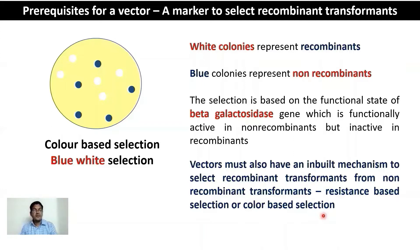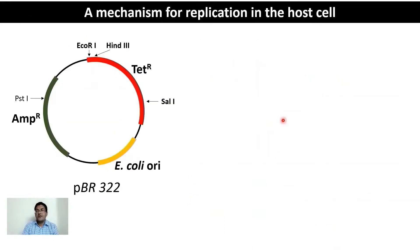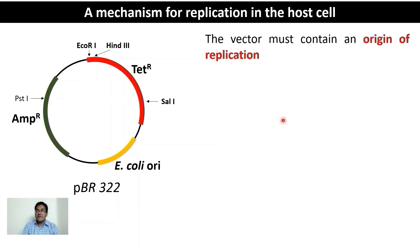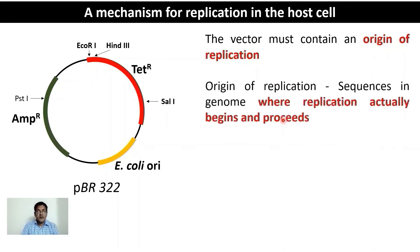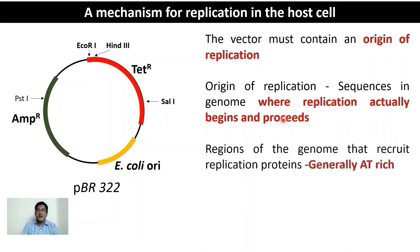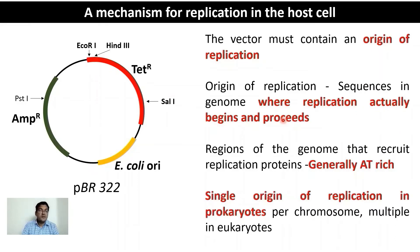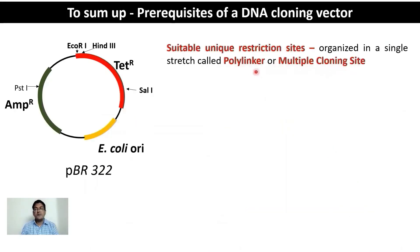Vectors must have an inbuilt mechanism to select recombinant transformants from non-recombinant transformants. Resistance-based selection and color-based selection are the two options available. Color-based selection is a one-step process while resistance-based selection is a two-step process. The other critically important property of the vector is that it must be able to replicate autonomously. All vectors must contain an origin of replication — the point from where replication of the vector starts and spreads over the entire vector.